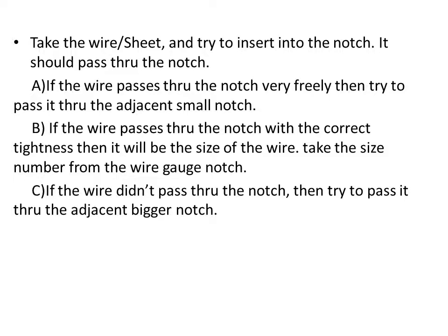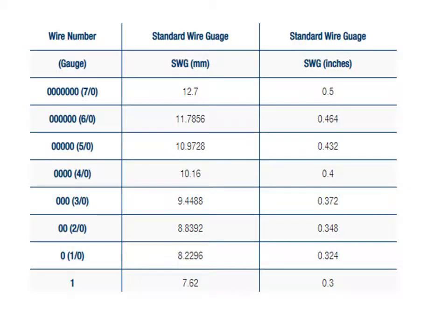For example, if the wire fits comfortably into notch number 1, the size of the wire is 7.62 mm or 0.3 inches. This is the process to measure wire size using the standard wire gauge (SWG).